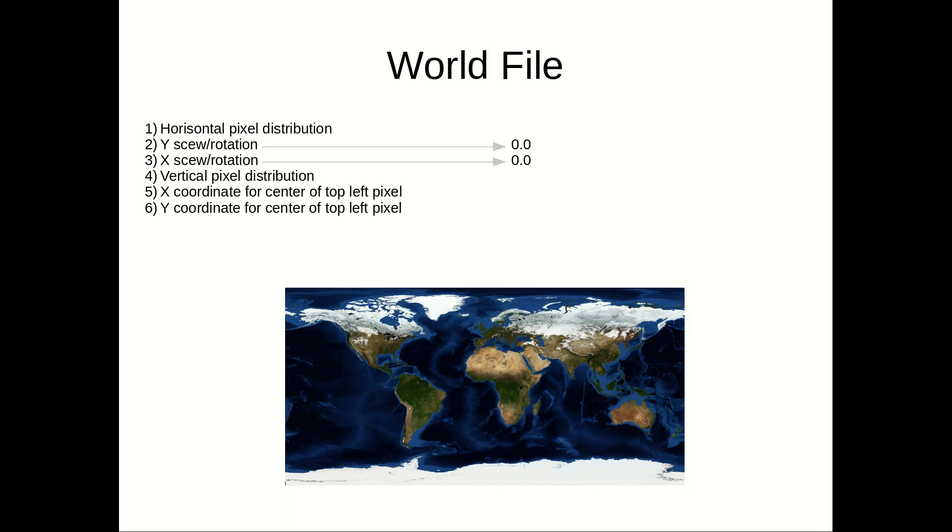The top left coordinate is minus 180 degrees longitude for the X and 90 degrees latitude for the Y. To calculate the resolution, you take the coordinate extent of the raster file and divide it by the number of pixels, for X and for Y. The Y value is given from the top down, which means you need to make this negative.